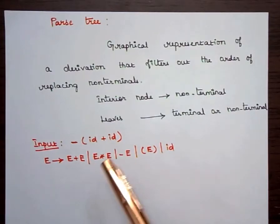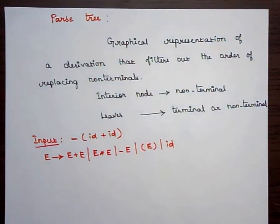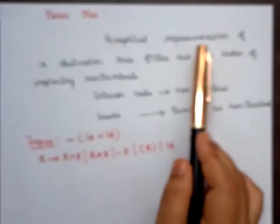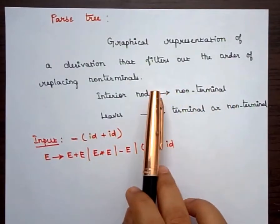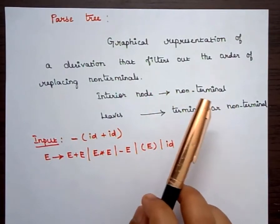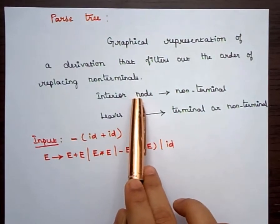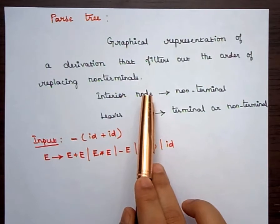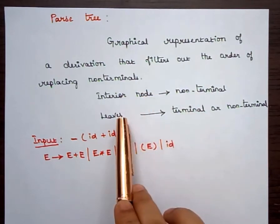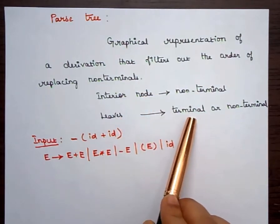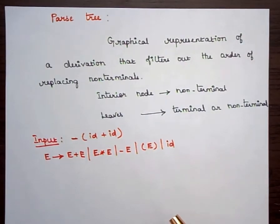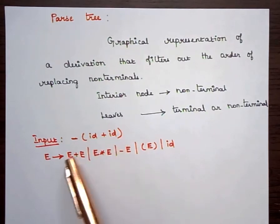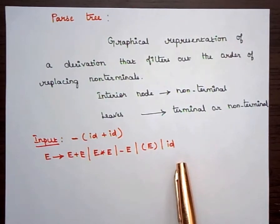Welcome to the class. Here we are going to discuss about the construction of a parse tree. Generally, a parse tree is a graphical representation of a derivation, and it filters out the order of replacing non-terminals. The parse tree consists of interior nodes and leaves, where interior nodes correspond to non-terminals and leaves correspond to terminals or non-terminals. Now we'll see how we can construct the parse tree for a given input based on the productions of this grammar.